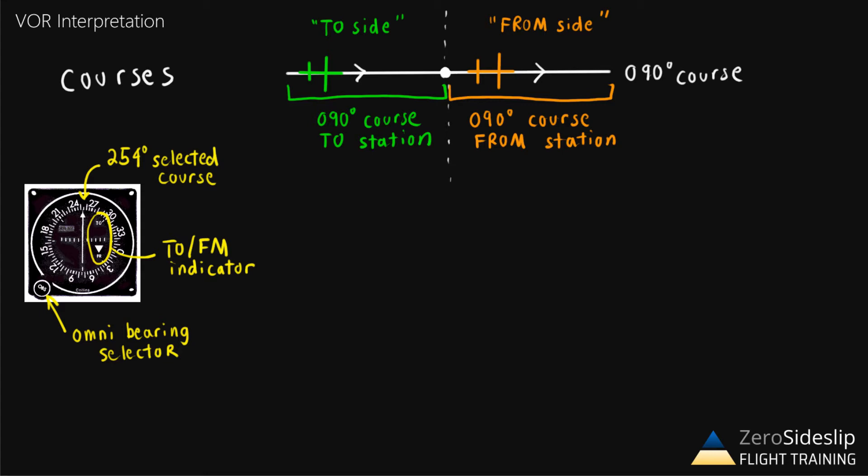There could be an arrow pointed upwards that would indicate that the airplane is on the to side. But in the case we have here, the arrow is pointed down, which means we're on the from side. To start with a simple example, let's draw a VOR indicator corresponding to the 090 course that we've drawn above. If the up arrow of the to from indicator were showing, this would indicate that we're somewhere on the to side of the VOR. However, if the down arrow were showing, this would indicate that we're somewhere on the from side of the VOR.